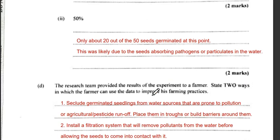At 50 percent concentration, only around 20 out of the 50 seeds germinated. This is likely due to the seeds absorbing the particulates in the water. The high concentration of pollutants in the water was absorbed by the seeds, inhibiting germination.